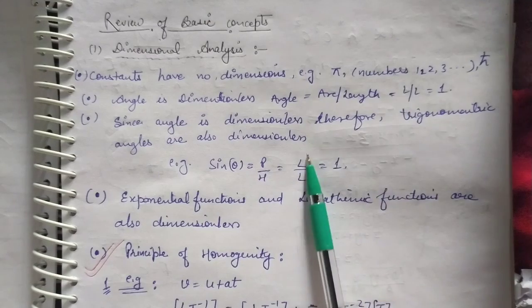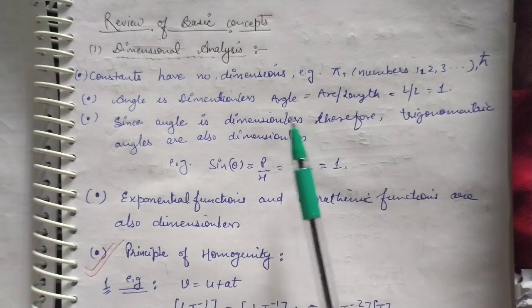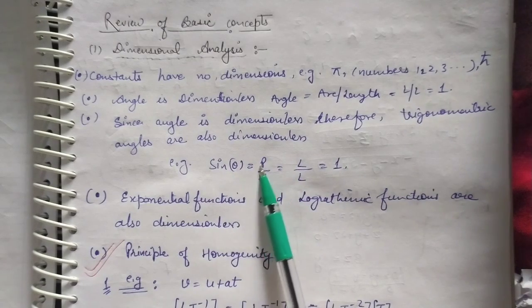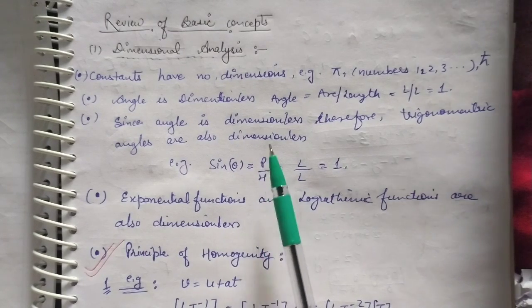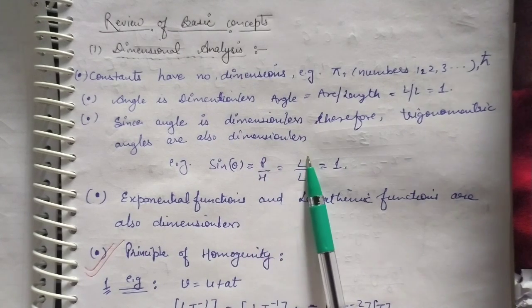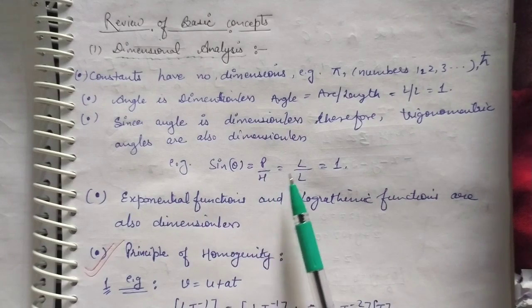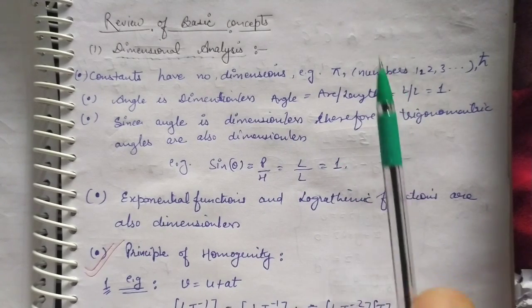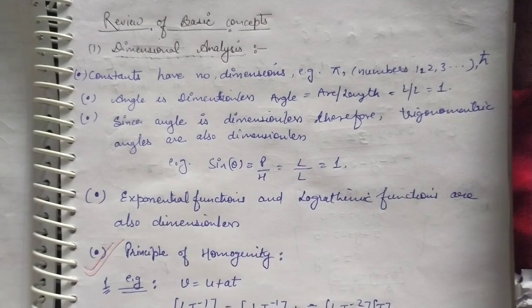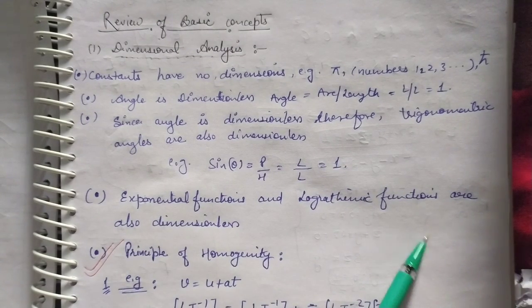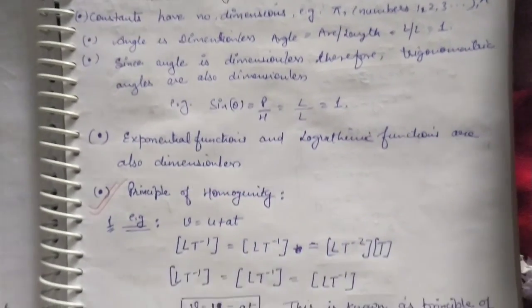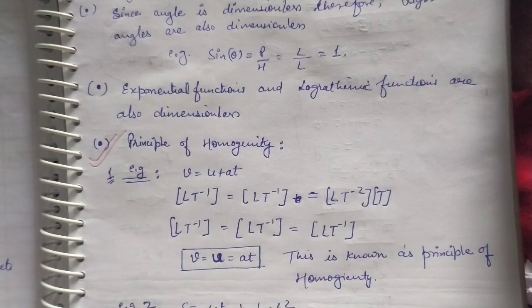Since angles are dimensionless, all trigonometric functions are also dimensionless. For example, sine theta equals perpendicular upon hypotenuse — both are lengths, they cancel out, and we are left with 1, which is a number. So sine theta is also a dimensionless quantity. Also, exponential functions and logarithmic functions are dimensionless. Now the important property that will be used in many questions is the principle of homogeneity.